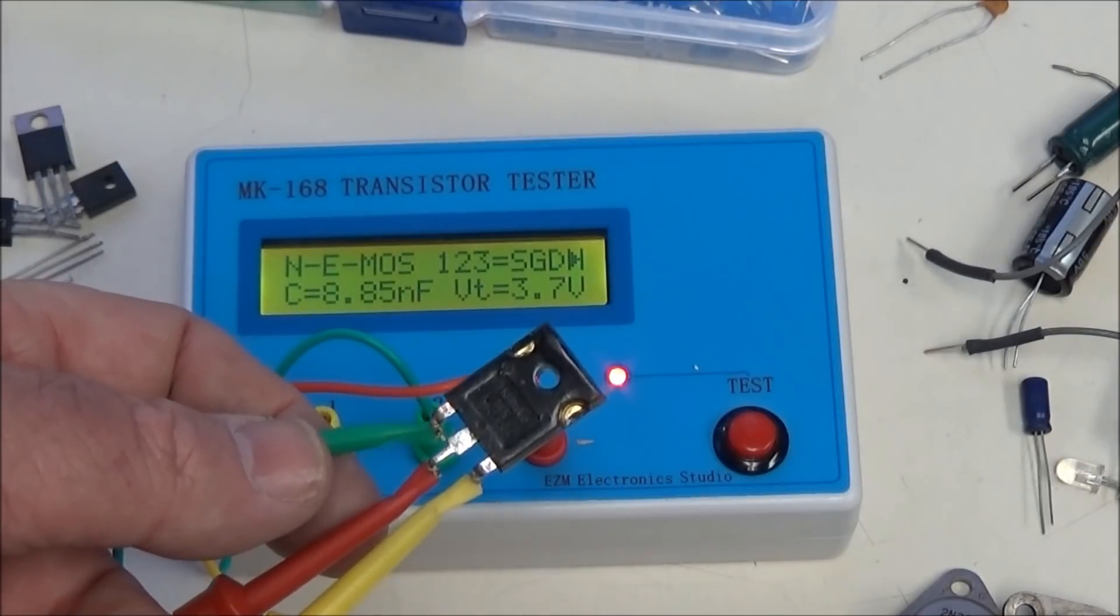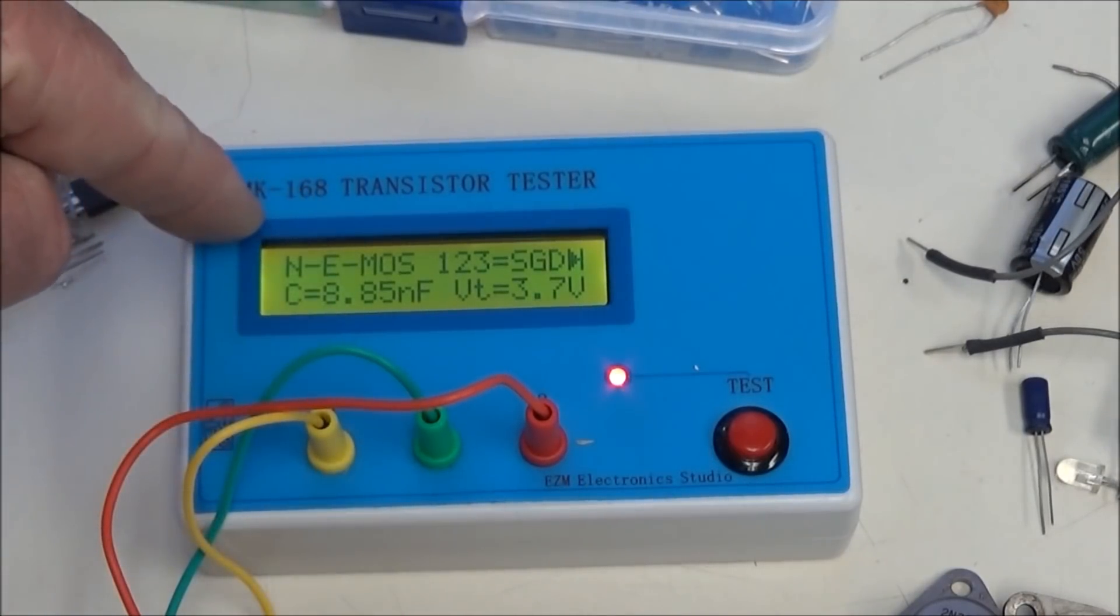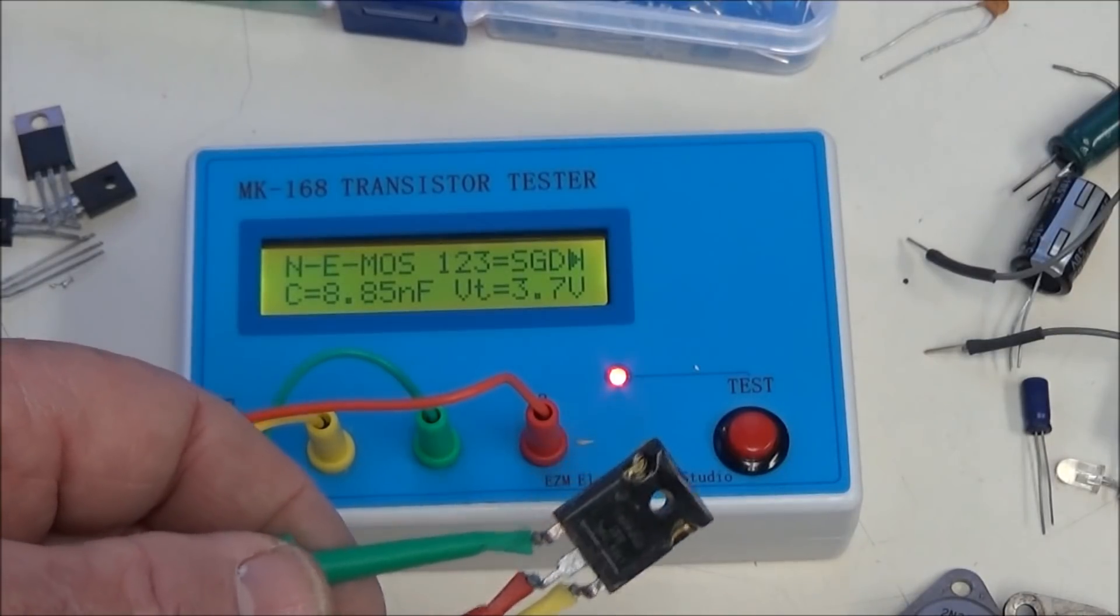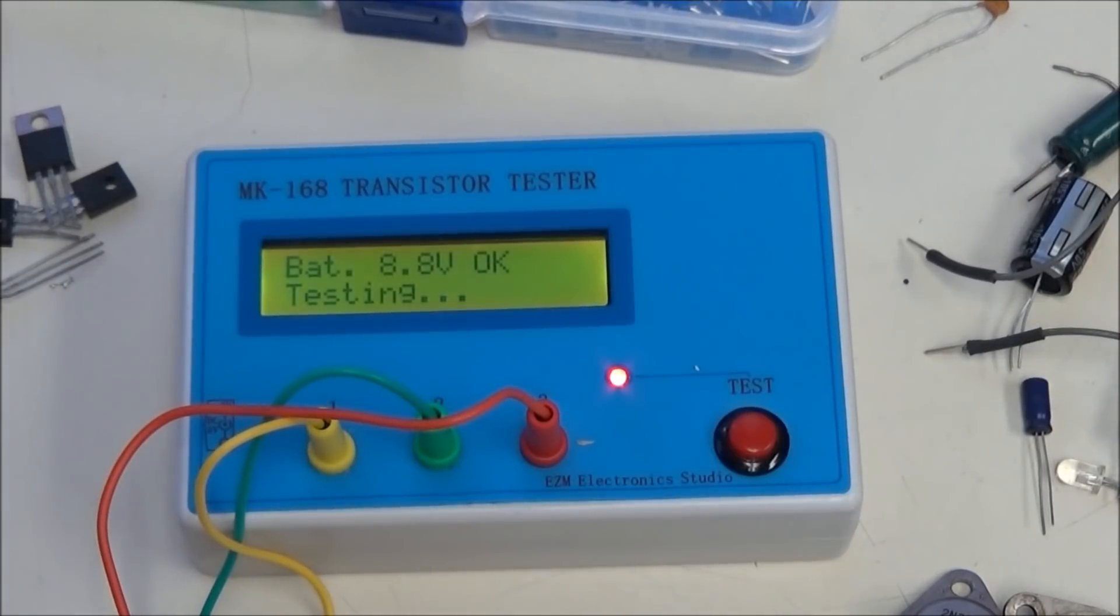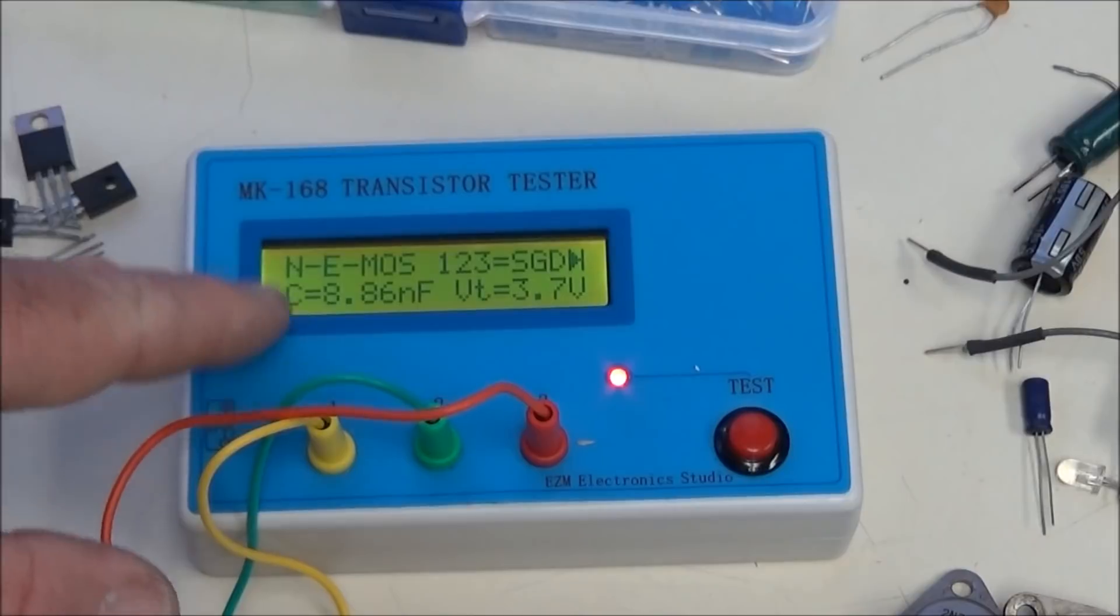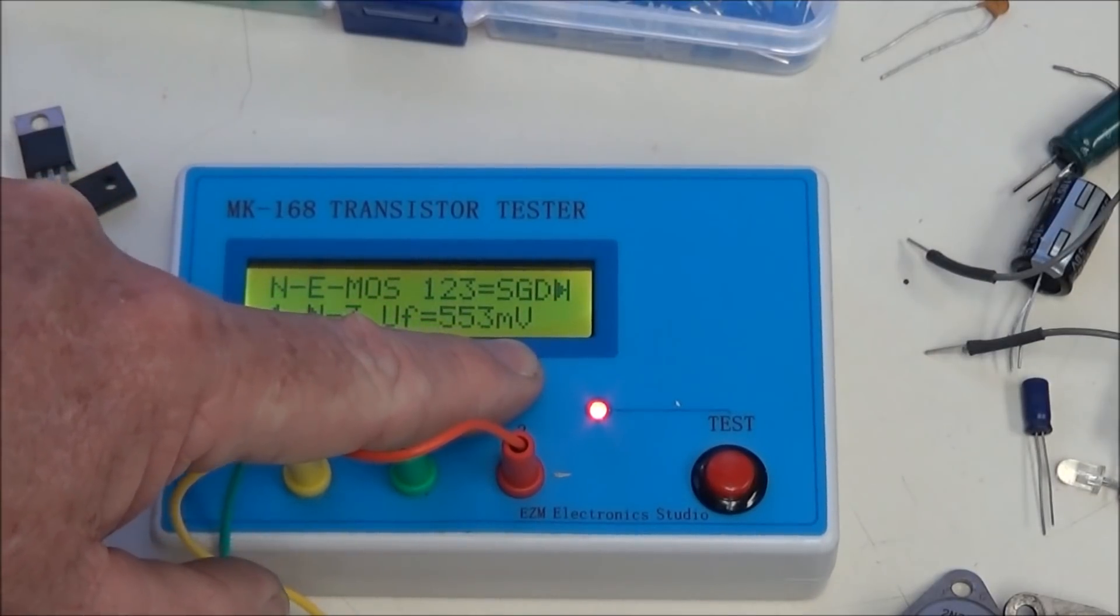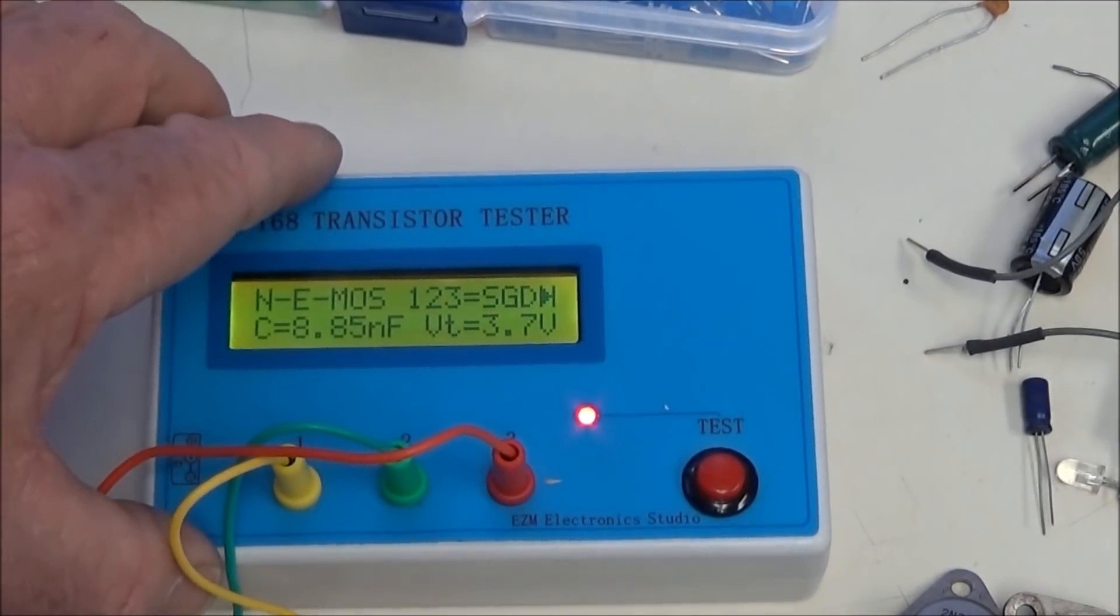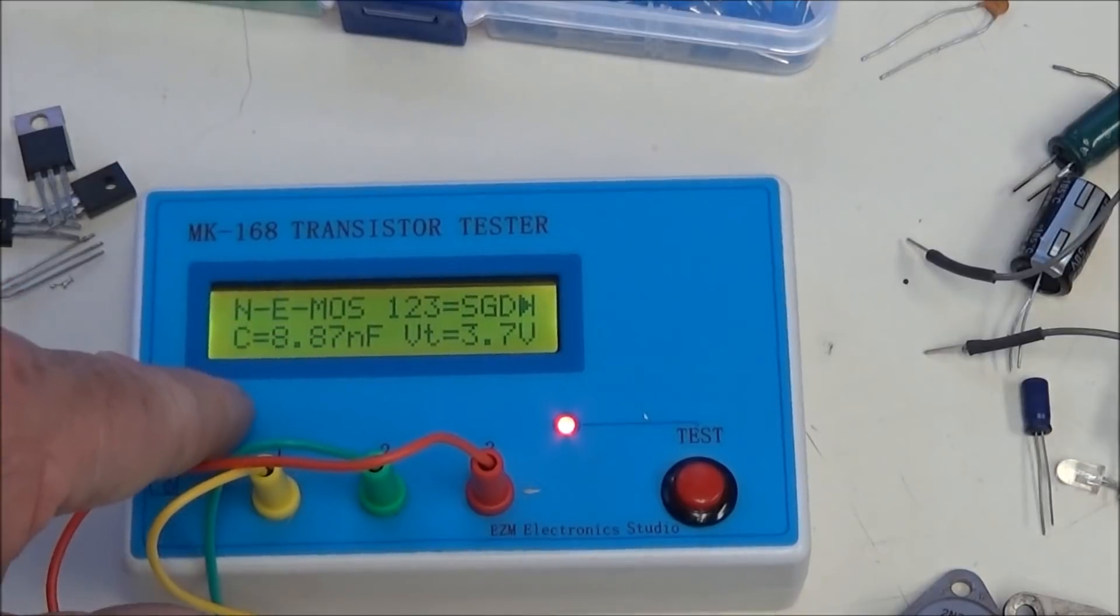Here I'm testing a large power MOSFET. You notice it's an N-channel. It identified the gate, source, drain. Turn-on voltage is 3.7 volts and it has an internal diode. Note again the second line. When you first test it, there's your diode, there's your turn-on voltage, and that's the gate capacitance. The UF there was referring to the diode.